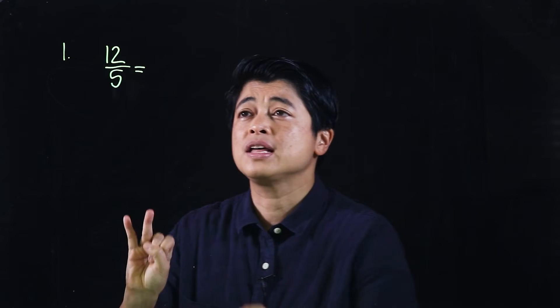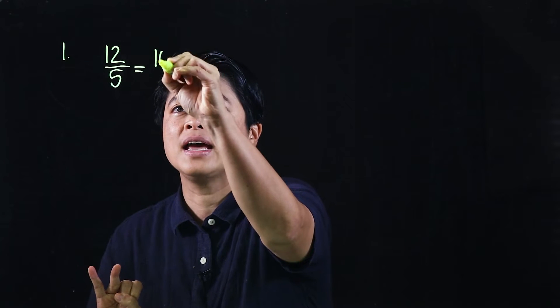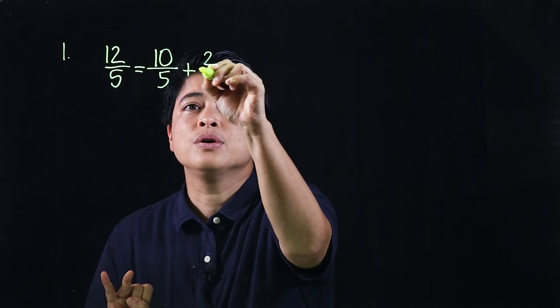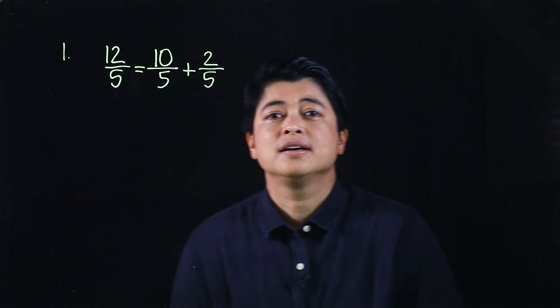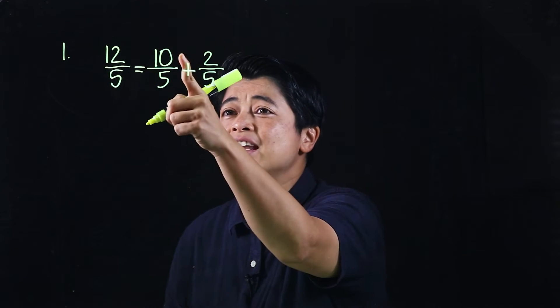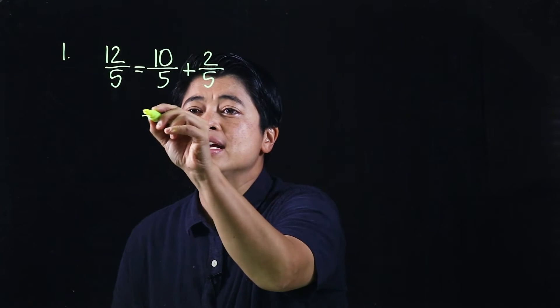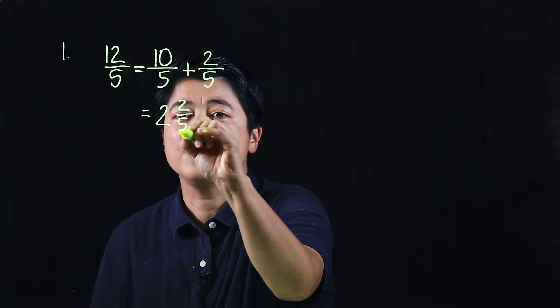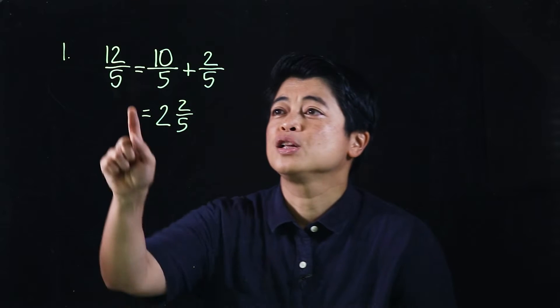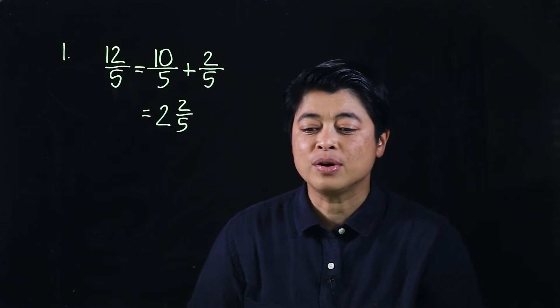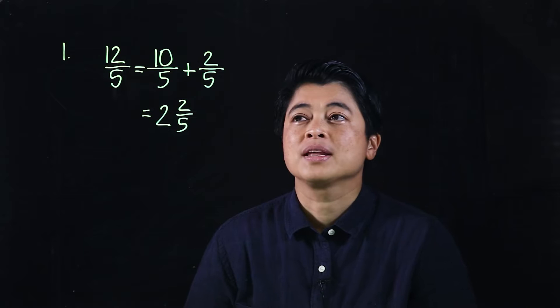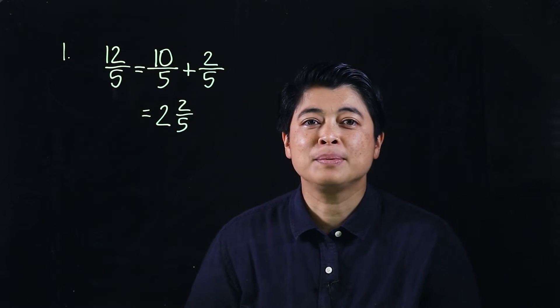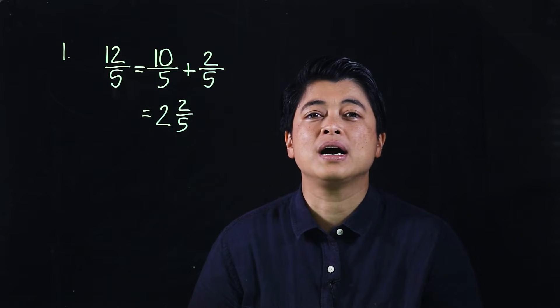If I demonstrate, that would be 5, 10. So this will be 10 over 5 and we need to add 2 over 5. Which means this 10 over 5 is 2, and this is still 2 fifths, which means 12 over 5 is equal to 2 and 2 fifths.